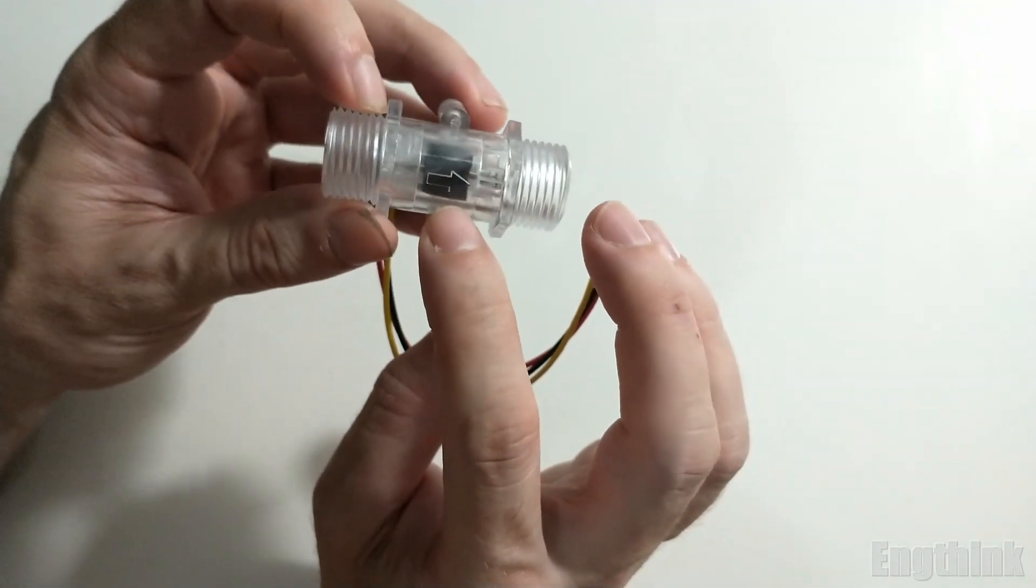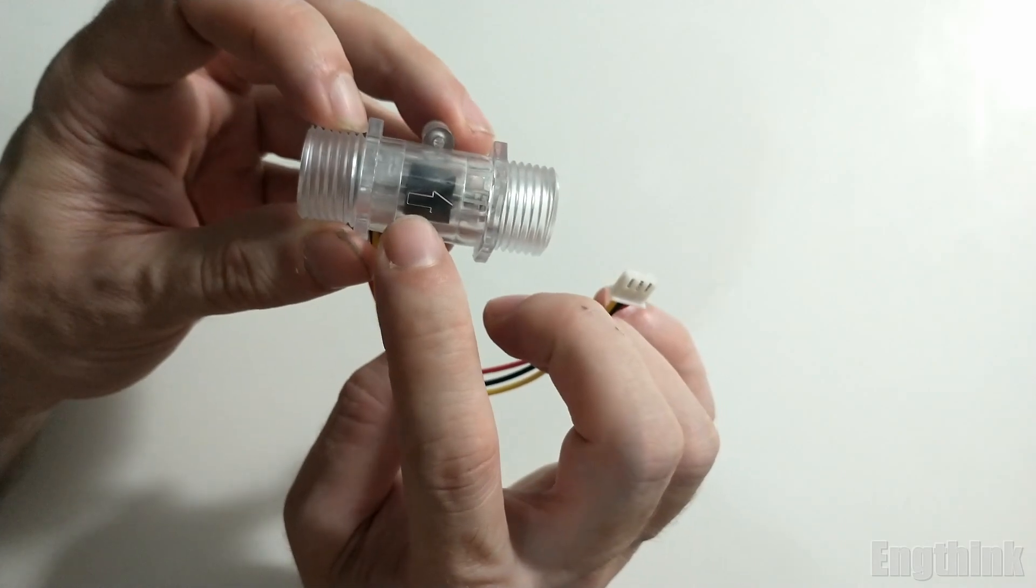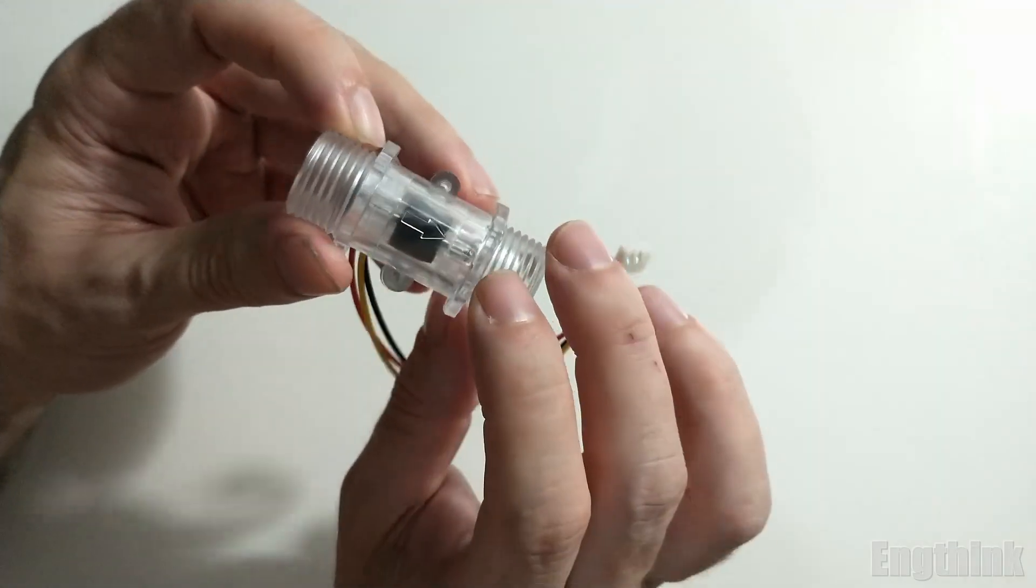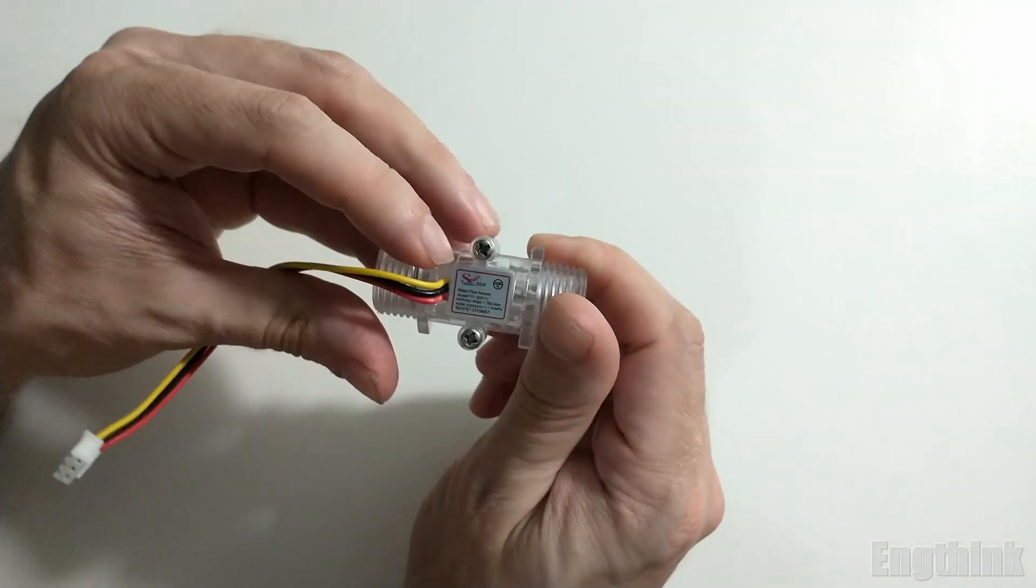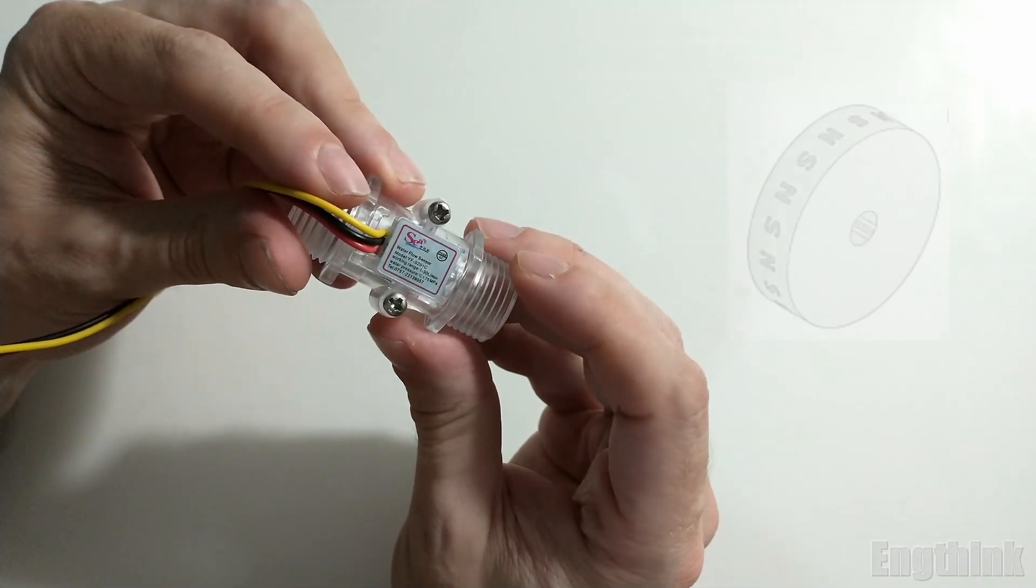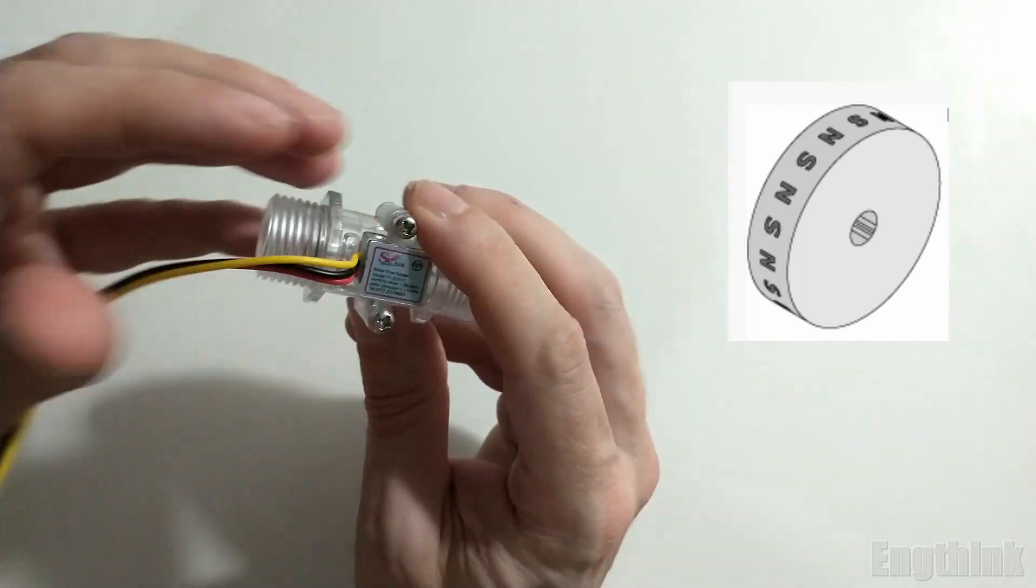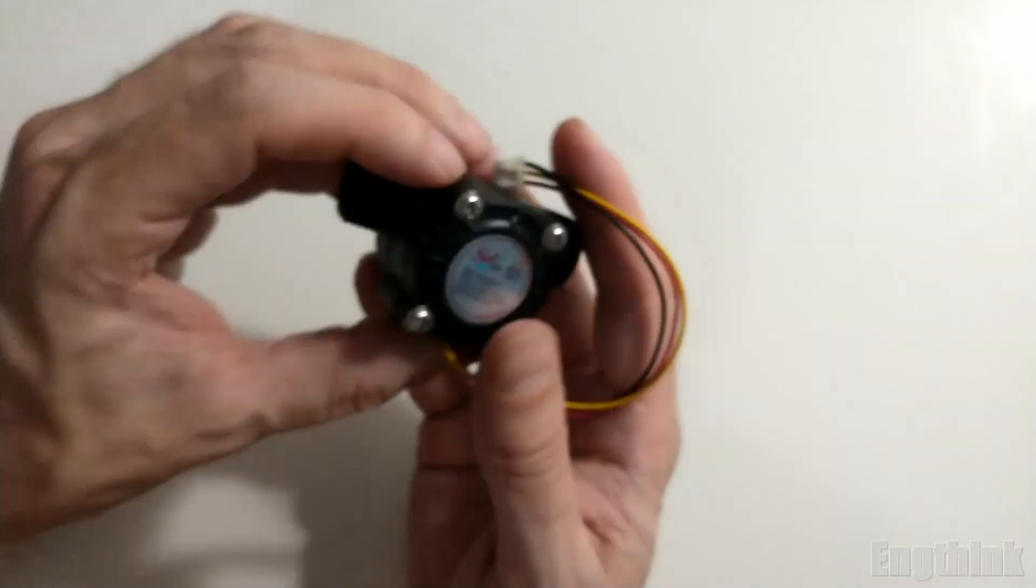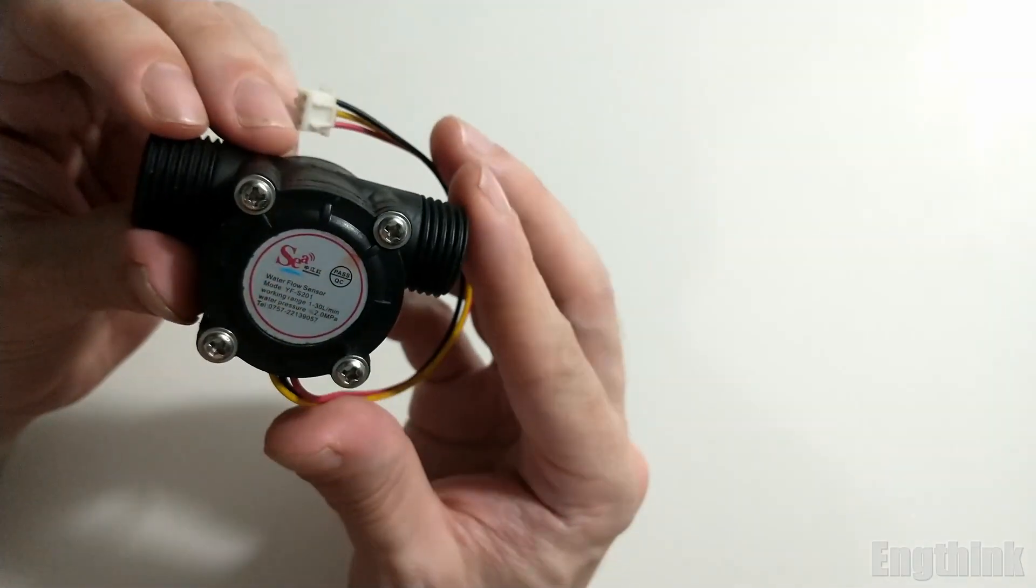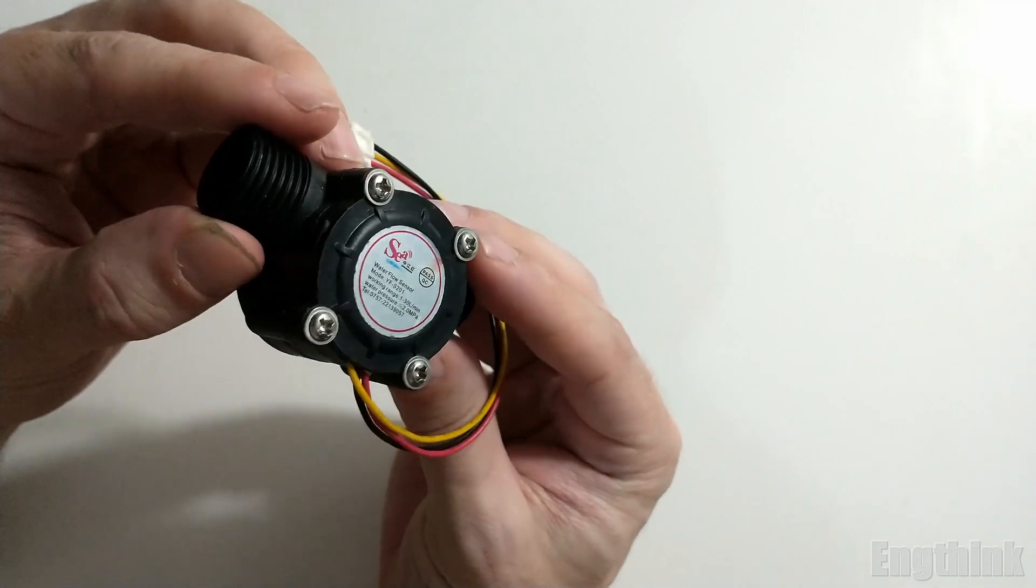As you can see, it's possible to see internally the gear or the turbine that is responsible for moving when you have some kind of fluid flowing through the sensor. This movement of the gear will be detected by the Hall effect sensor because there is a magnet attached to the gear. Now let's move to the last flow sensor.